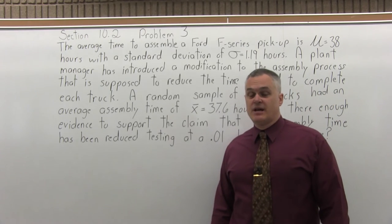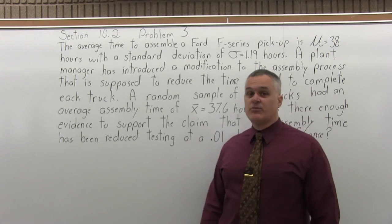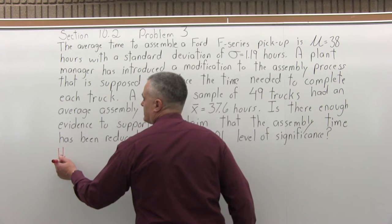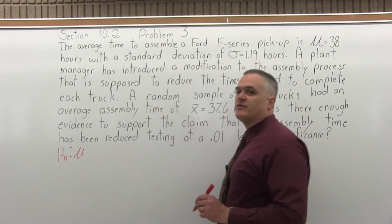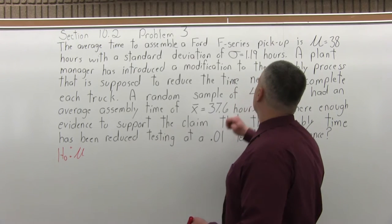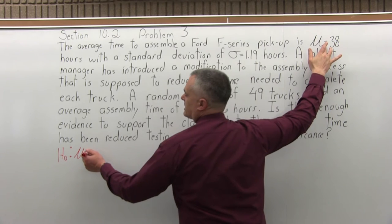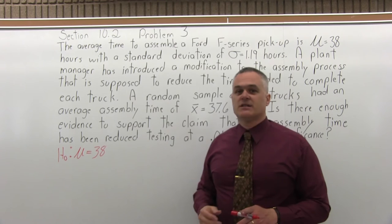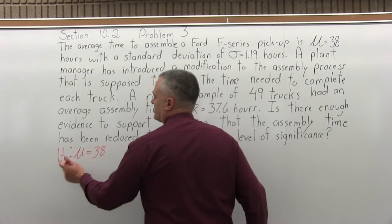This is a hypothesis test. The population standard deviation is known. This is a six-step process. Step one: state the null hypothesis. The symbol is a capital H with a subscript of zero. We're going to have mu with some condition of equality — could be equals, could be greater than or equal to, less than or equal to. Here we have mu equals 38. That's my null hypothesis: mu equals 38.